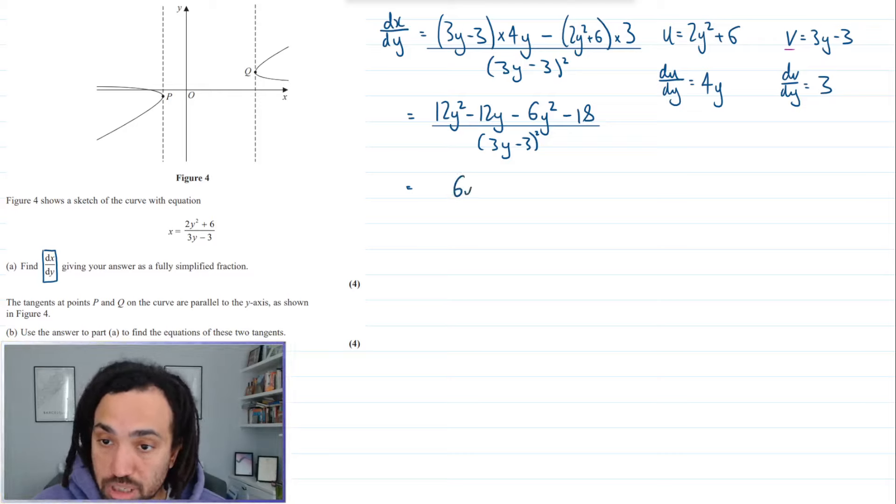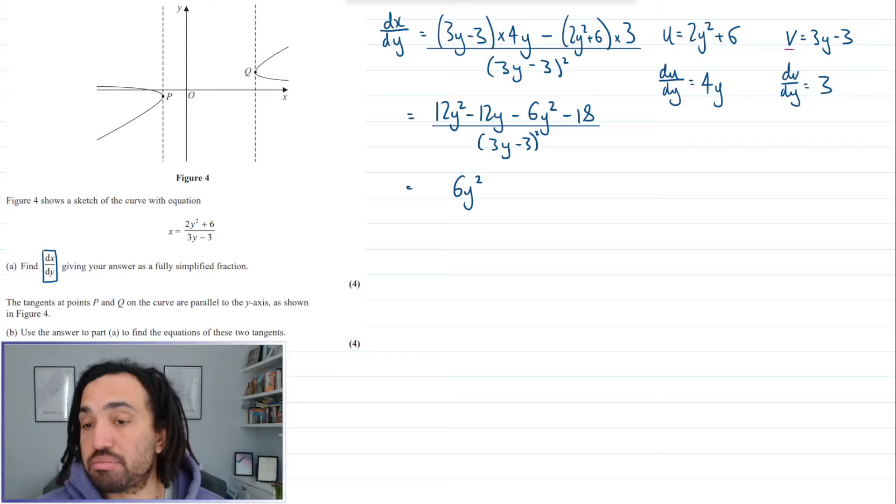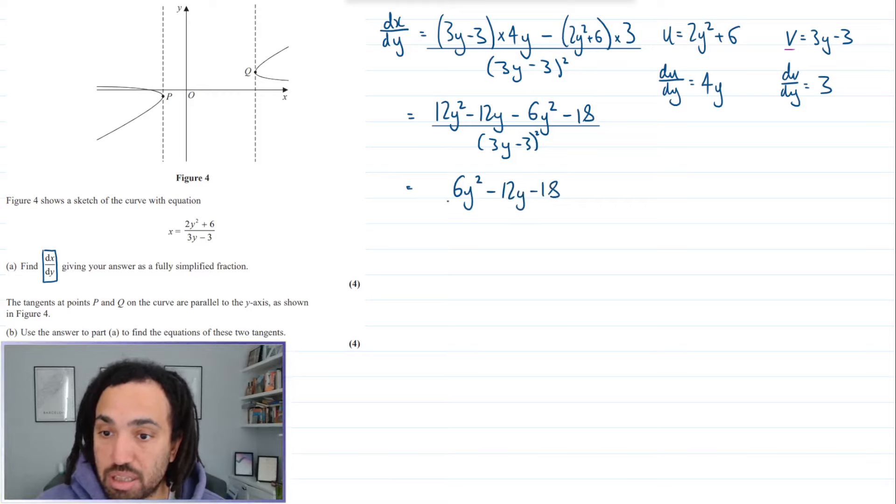So the top line becomes 6y squared minus 12y minus 18. And I can see here that there's a factor of 3 and there's also a factor of 3 in here as well.